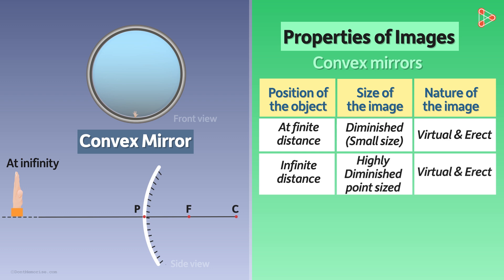Notice that even though the object is kept at infinity, the image is not at infinity. It is at a finite distance behind the mirror even though the object is infinitely far away. In fact, this is the maximum distance at which image can be formed. Image in a convex mirror cannot be formed behind this point.